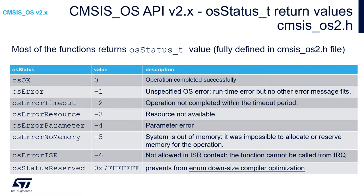Minus 5 means there was not enough memory — the system was out of memory and could not allocate memory for the operation. Minus 6 is a very important one: the function was not allowed to be executed from an interrupt. It is important to understand the meaning of these particular values and to check the return value during execution of OS functions in order to detect abnormal situations and debug the application.